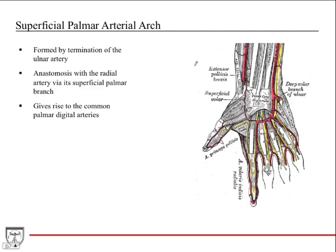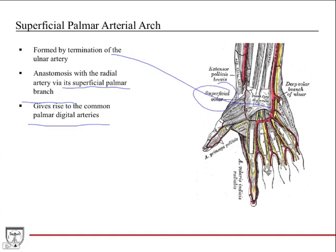The superficial palmar arch is formed by the termination of the ulnar artery. It anastomoses with the radial artery via its superficial palmar branch, and then it gives rise to the common palmar digital arteries. It's formed specifically by the superficial branch of the ulnar artery. The superficial palmar branch of the radial artery — also called the superficial volar branch — joins with the superficial palmar arch to complete that anastomosis.